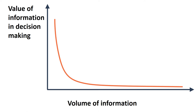In reality, however, information aggregation is much closer to an exponential function. The first few pieces of information are weighted much more heavily than later information. We tend to use the first piece of information to reach our decision, but fail to integrate new information to update our decision.